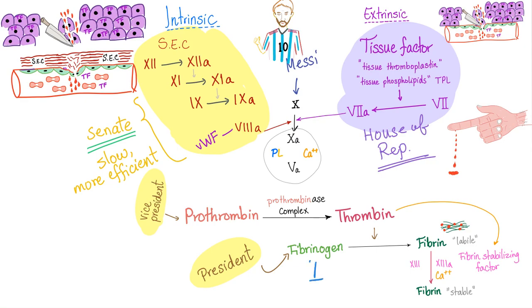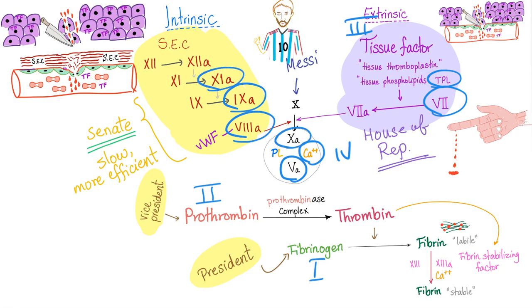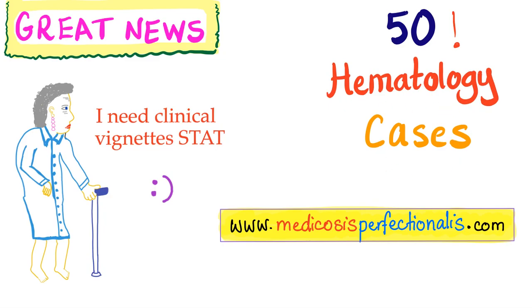Okay, let's play this game. Fibrinogen is factor 1. Prothrombin is factor 2. Tissue factor or tissue thromboplastin or TPL is factor 3. Factor 4 is the freaking calcium. Factor 5 is the labile factor. Factor 7 is the stable factor. Factor 8 is anti-hemophilia A. Factor 9 is anti-hemophilia B. Factor 11 is anti-hemophilia C. How about factor 10? This is the Stuart-Prower factor. Factor 12 is the Hageman factor. And factor 13 is the fibrin stabilizing factor. I have 50 hematology cases about bleeding and coagulation disorders on my glorious website. Go to medicosisperfectionalis.com. These are difficult.